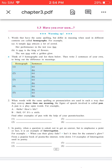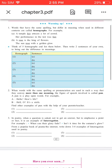Find other examples of pun with the help of your parents or teachers. Write four examples. Third, in poetry when a question is asked not to get an answer but to emphasize a point of fact, it is an example of interrogation. For example: When can their glory fade? Isn't it time for the autumn's glow? From popular books of poems or the internet, write down three or four examples of interrogation used in poetry.